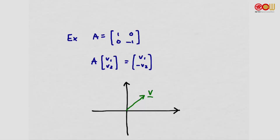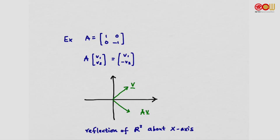For example, suppose we have a V vector — where is AV? We look at AV and we see that it's V1, same as V1, and then there's a minus V2. That means there's some operation we are doing to the vector V. It's a reflection — a reflection of R2 about the x-axis. V and AV are like a mirror. This is x and this is y.